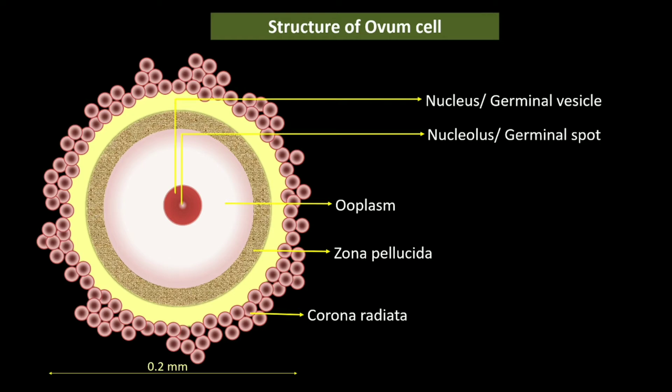The nucleus, or germinal vesicle, is large and spherical, and initially occupies a central position. But as the ovum grows, it becomes eccentric in position. The human egg therefore has a polarity: the part of the ovum with the nucleus and polar body is called the animal pole, and the other part is called the vegetal pole.